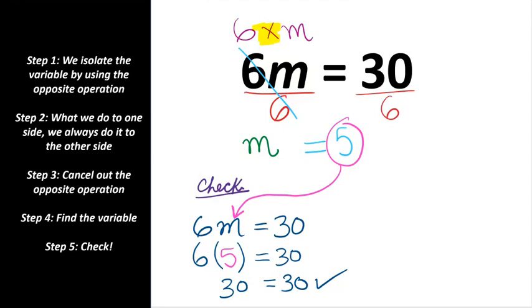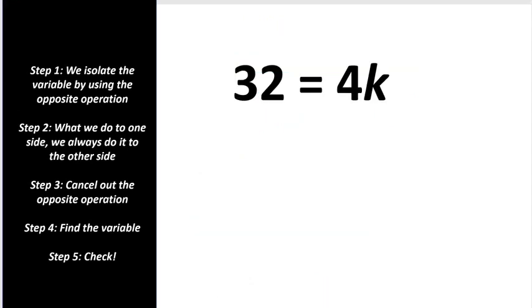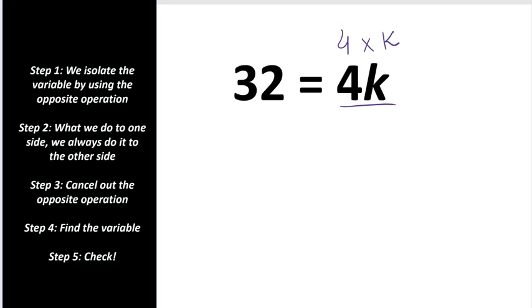Let's do another example. We have 32 equals 4k. 4k just means 4 times k. We need to isolate the variable by using the opposite operation. We are multiplying the variable by 4, so the opposite operation of multiplying is dividing. We are going to divide the variable by 4.